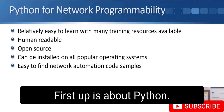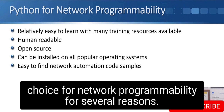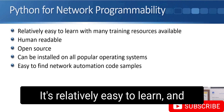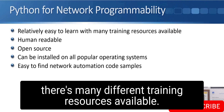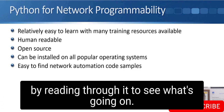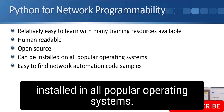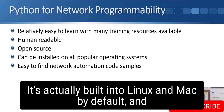First up is Python, which is typically the language of choice for network programmability for several reasons. It's relatively easy to learn, there are many training resources available, it's human readable, it's free and open source, and it can be installed on all popular operating systems — it's actually built into Linux and Mac by default.